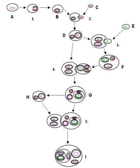An endosymbiont or endobiont is any organism that lives within the body or cells of another organism in a mutualistic relationship with the host body or cell, often but not always to mutual benefit. The term endosymbiosis is from the Greek: endo meaning within, syn meaning together, and biosis meaning living.